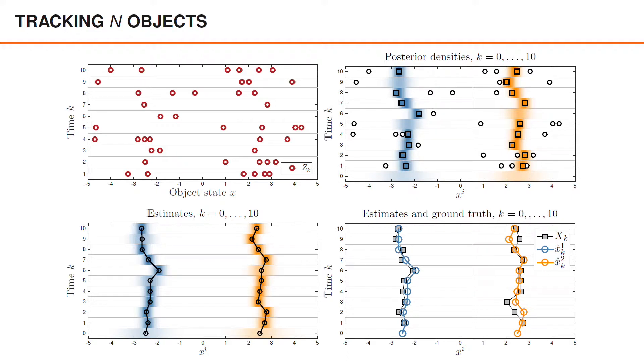In the bottom left, we have illustrated the posterior densities together with estimates shown as black circles. The black lines show how the sequence of estimates for each object evolves. Lastly, in the bottom right, we have a comparison of the object estimates and the ground truth. Due to the measurement noise and the process noise, the estimates are not perfect, but they tend to follow the ground truth reasonably well.